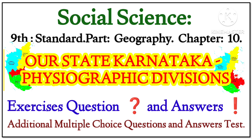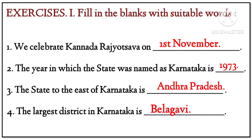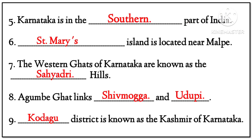Exercises. Fill in the blanks with the suitable words. First: we celebrate Kannada Rajyotsava on 1st November. Second: the year in which the state was named as Karnataka is 1973. Third: the state to the east of Karnataka is Andhra Pradesh. Fourth: the largest district in Karnataka is Belagavi. Fifth: Karnataka is in the southern part of India.